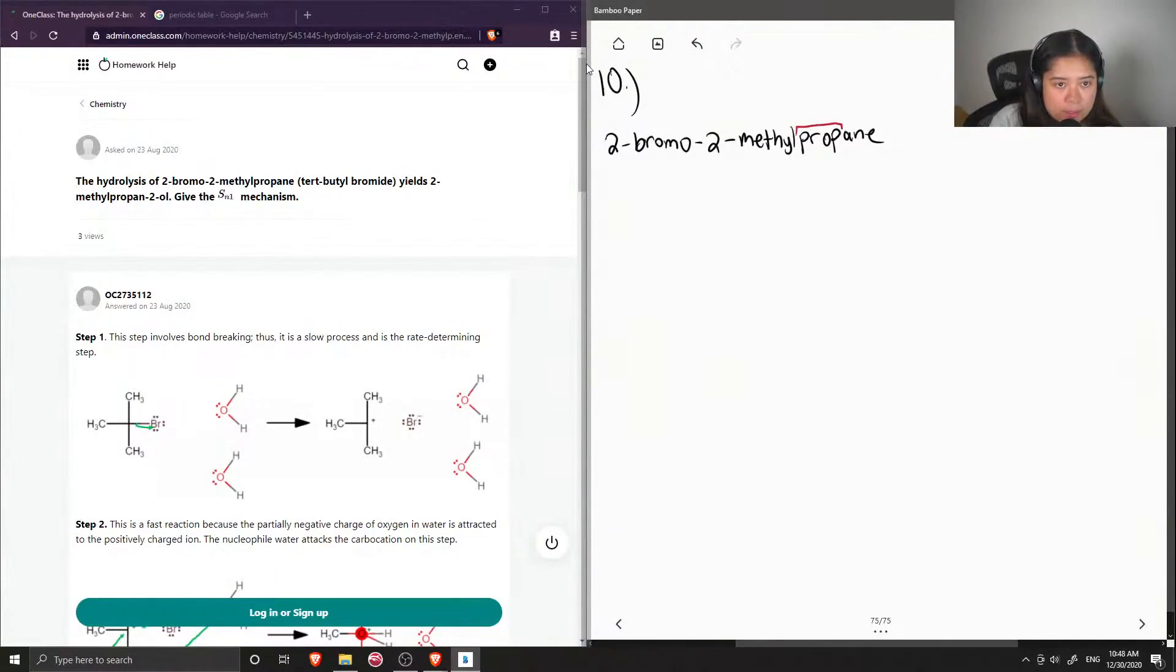So when we have prop, this means that our parent chain is three carbons long, and the fact that it ends in ane tells us that there are only single bonds involved.